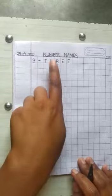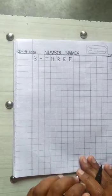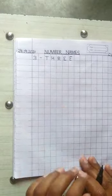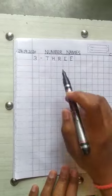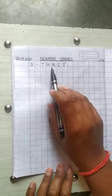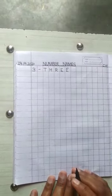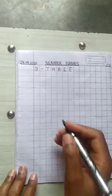Our topic is the same: number names. Today we will learn the spelling of 3. What is the spelling of 3? T-H-R-E-E. Let's start.